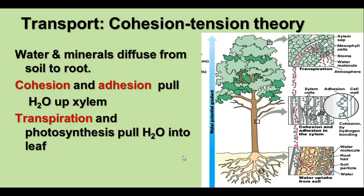The stomata are involved in the transport of water throughout the plant. The way water transport occurs in the xylem is called the cohesion-tension theory. Water and minerals diffuse up from the soil to the root and are pulled up the xylem vessels by cohesion and adhesion. Cohesion is the attraction of like molecules for each other, and adhesion is the attraction of different molecules for each other — with water, both involve hydrogen bonding between water molecules and between water molecules and the vessel walls. Transpiration — the evaporation of water vapor from leaves and the use of water for photosynthesis — helps pull water up into the leaf, drawing this column of water from the roots all the way to the top of the tree.